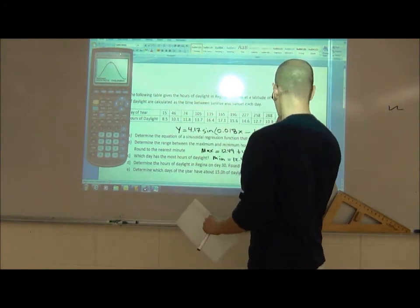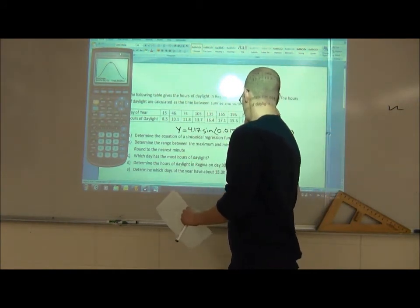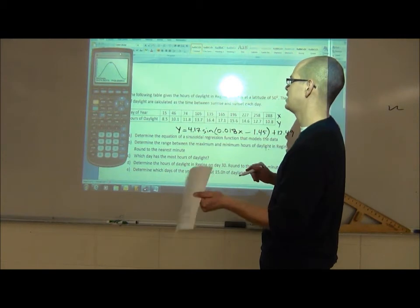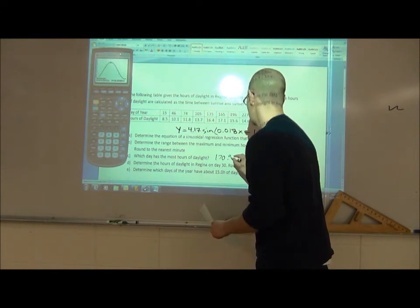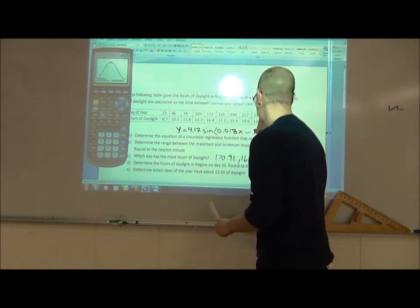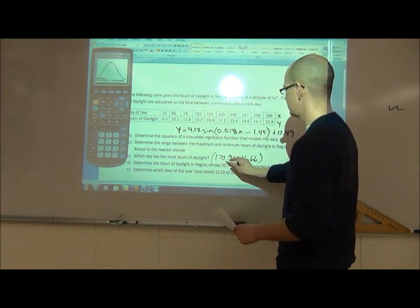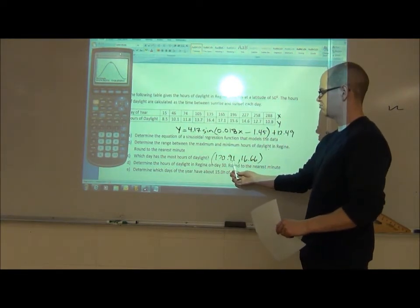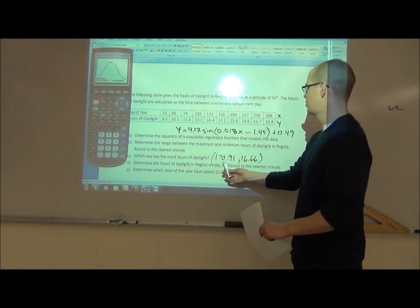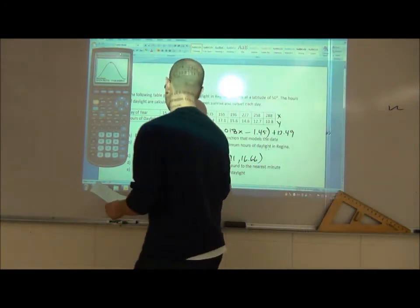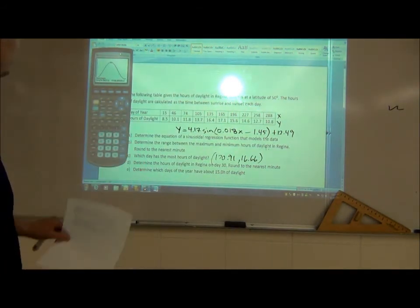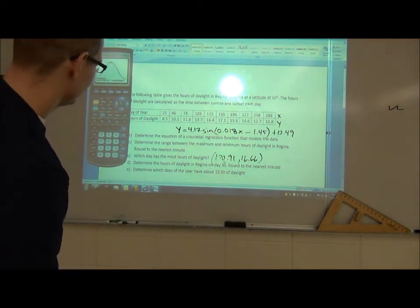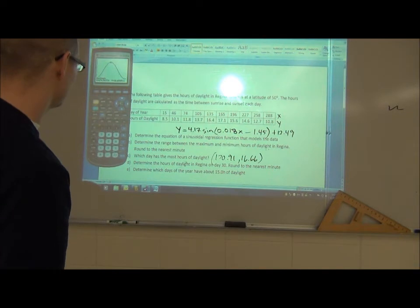So to answer question C, which day has the most hours of daylight, I'm going to erase this, I'm running out of room, so you can write those two down. The day that has the most hours of daylight is, well, this ordered pair here is 170.91 comma 16.66, so day 170 basically. Way almost at sunset, almost the next day. So basically day 170 or day 171, I don't know which one you would pick. I don't think they'd be as cruel in a multiple choice to make it both those two as possible, so I guess day 170 has the most hours of daylight.